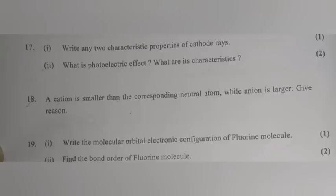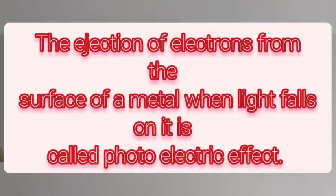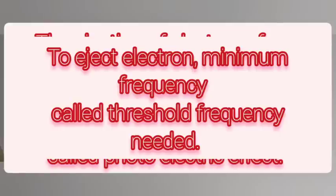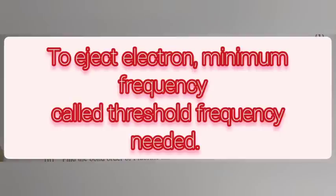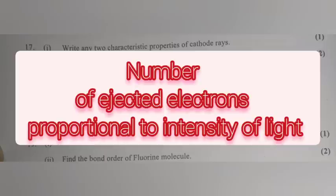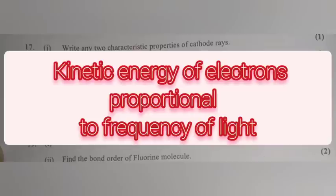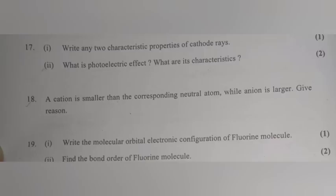Question 2: What is the photoelectric effect? What are its characteristics? Answer: The ejection of electrons from the surface of a metal when light falls on it is called the photoelectric effect. Its characteristics: 1. To eject an electron, a minimum frequency called threshold frequency is needed. 2. Number of ejected electrons is proportional to intensity of light. 3. Kinetic energy of electrons is proportional to frequency of light.